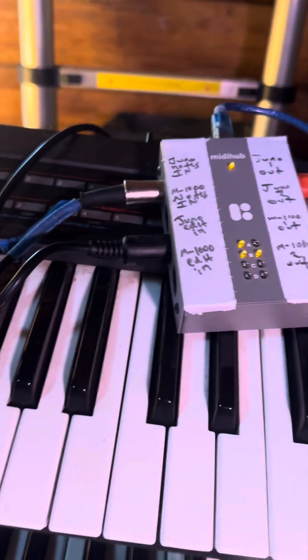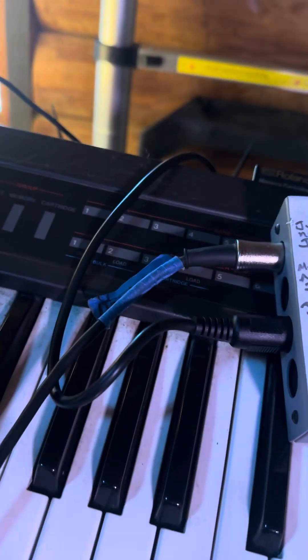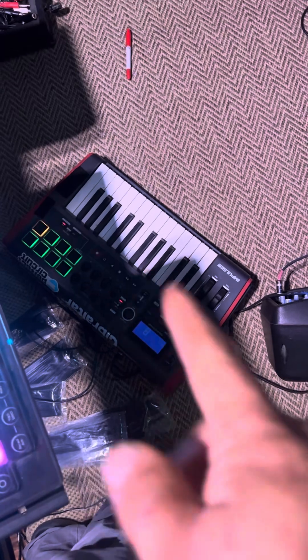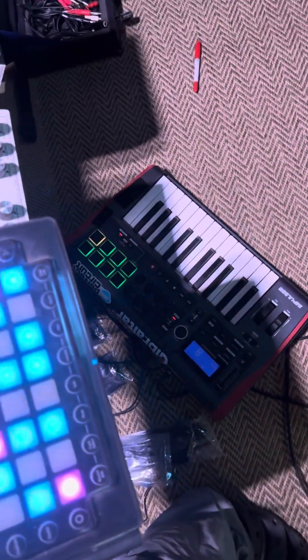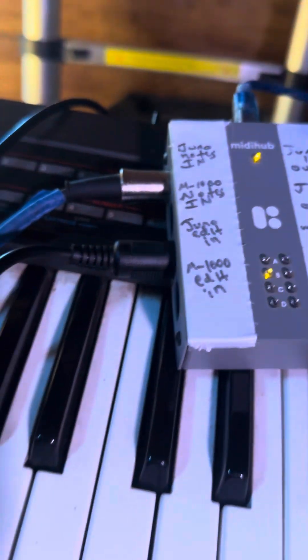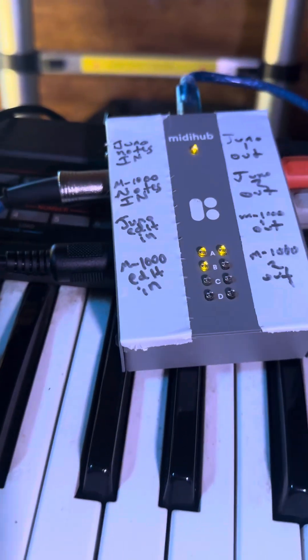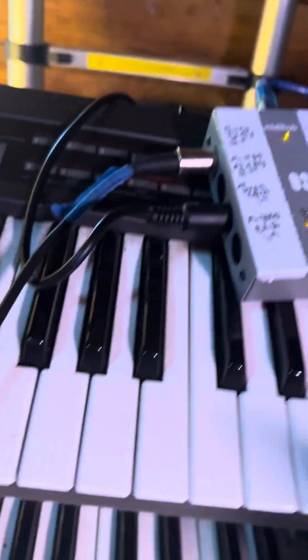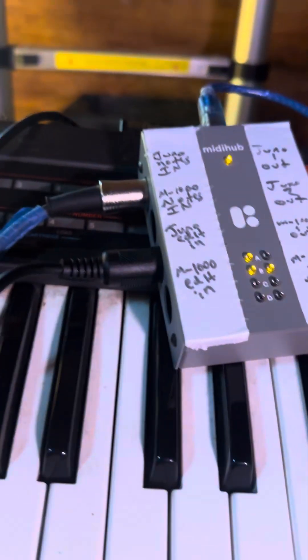I can do it all inside here. So basically, right now, the notes are just coming from this arpeggiator out of this Novation Impulse 25. But this could very easily just be notes in from anything. Most likely it would be from my sequencer, but it serves the purpose to test.